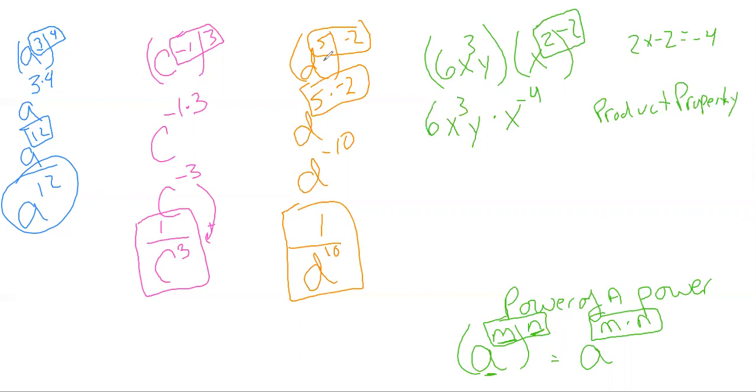What that means is if the bases are the same and they're multiplying, we can add their exponents. But I like to use the associative property, move things around first. So I'm gonna write six times x cubed times x to the negative fourth times y. And then I can write that x to the third plus negative four. That gives me six times x to the negative one. That's because three plus negative four is x to the negative one times y.